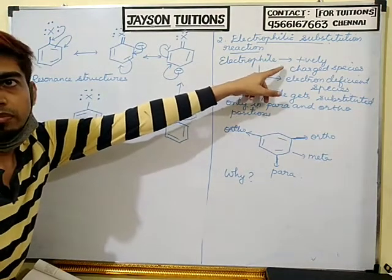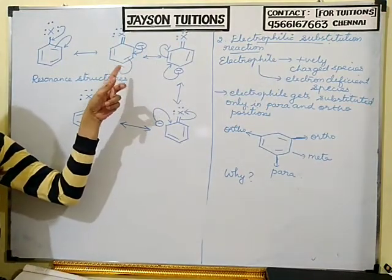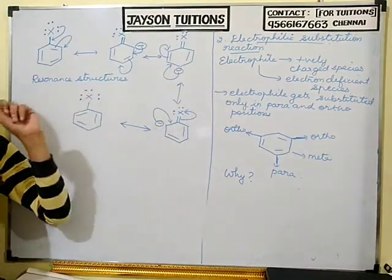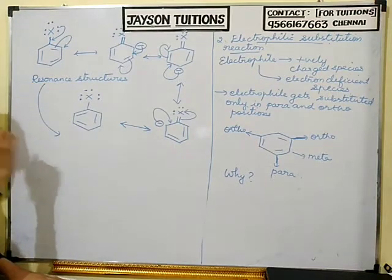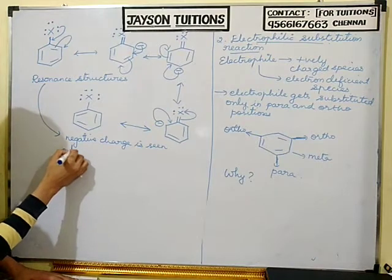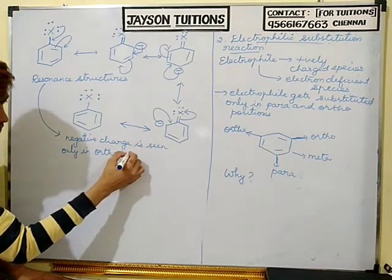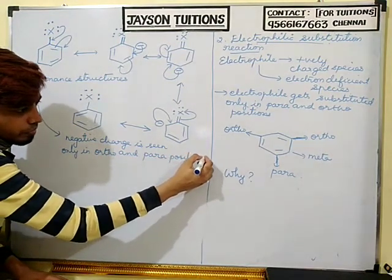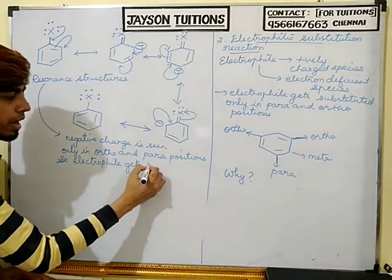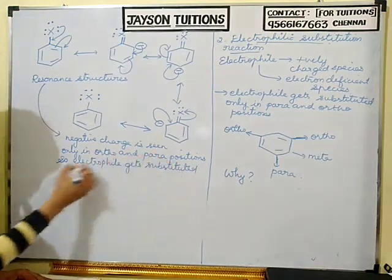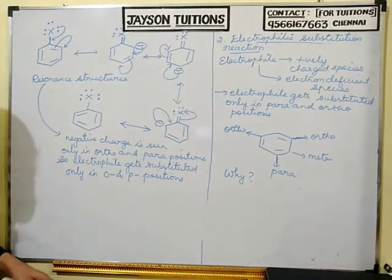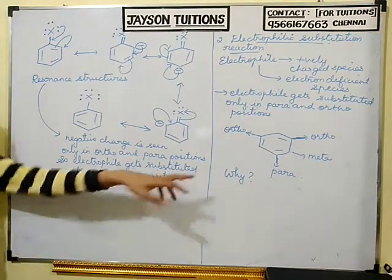The electrophile has a positive charge. The negative charge in the resonance structures is found only in ortho and para positions. Therefore, the positive electrophile gets attached only at the ortho and para positions. In the exam, you should draw the resonance structures and state this point.